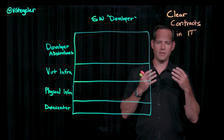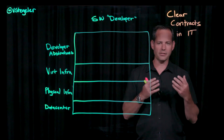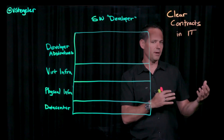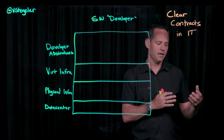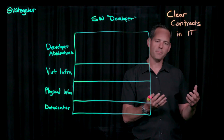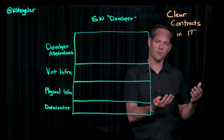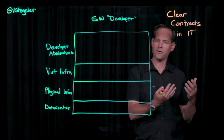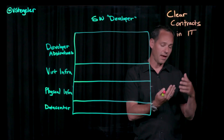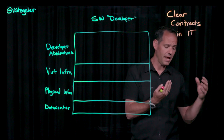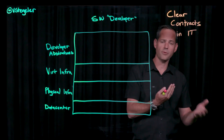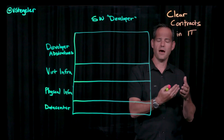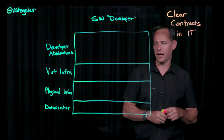The easiest example of a clear contract is between a software developer and the way a public cloud operates today. When they go to that public cloud, they have an API that they interact with, and they know all the features and functionality that are available. Meanwhile, that public cloud provider can do anything under the covers, provided they don't mess with the contract of the consumption model of that public cloud.